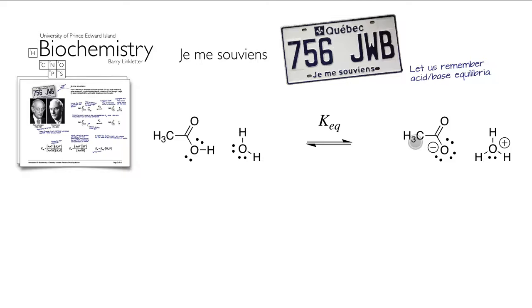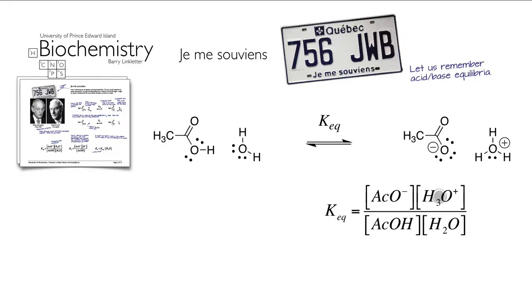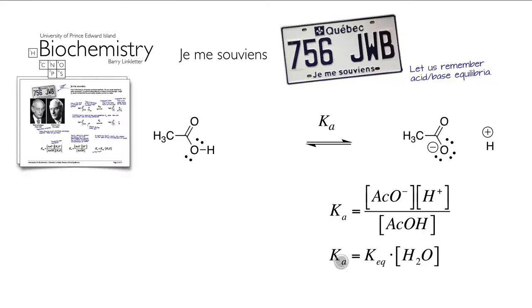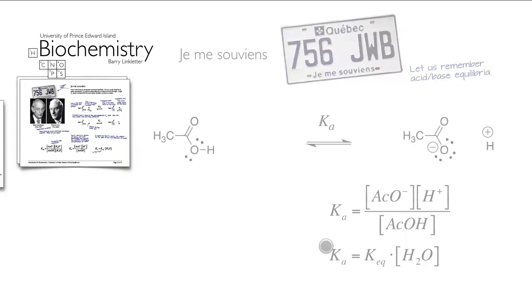There is an equilibrium constant for the proton transfer. Water is the solvent, so its concentration never changes. Rather than using the general equilibrium constant, we use the acid equilibrium constant Ka, where we fold the concentration of water into the constant and simplify the equation to only include the things that can change — the amount of acid and its products. The acid dissociation constant Ka equals the equilibrium constant times the concentration of water, giving us a new constant called Ka.